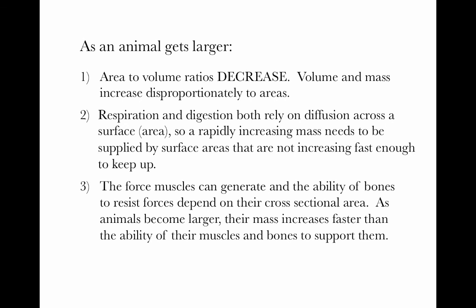Thinking about the musculoskeletal system, the force muscles can generate depends on physiological cross-sectional area, and the ability of bones to resist forces also depends on cross-sectional area. So as animals become larger, their mass increases much faster than the ability of their muscles and bones to support them. To deal with these challenges, a change in shape is necessary — and this is what we're talking about when we discuss allometry. Different parts will increase or decrease at different rates relative to linear increases in body size.